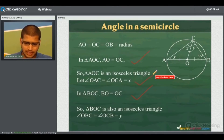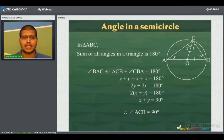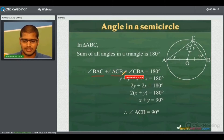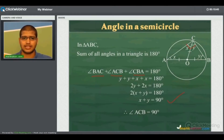In an isosceles triangle, angles opposite to equal sides are equal. So let angle OAC equal angle OCA equal x degrees, and angle OBC equal angle OCB equal y degrees. In triangle ABC, applying the property that the sum of all angles is 180 degrees: angle BAC plus angle ACB plus angle CBA equals 180 degrees, which gives x plus x plus y plus y equals 180 degrees. Simplifying, x plus y equals 90 degrees.